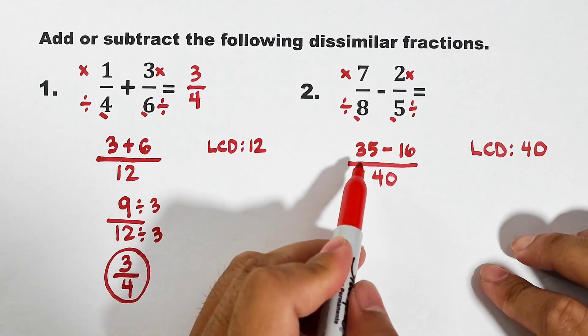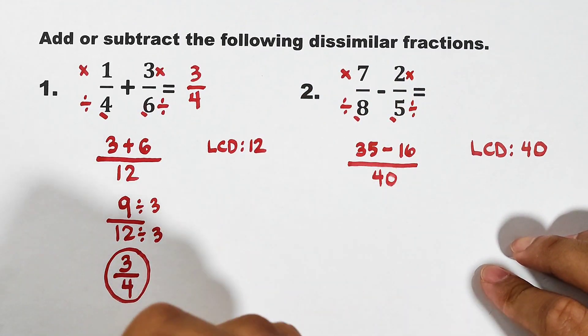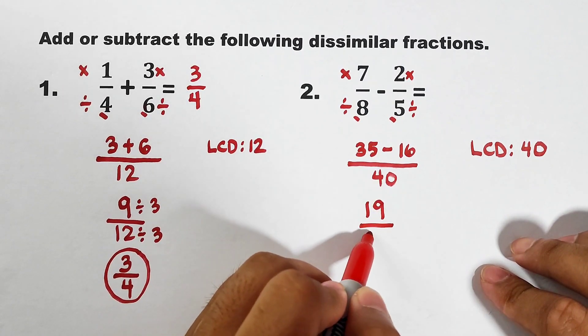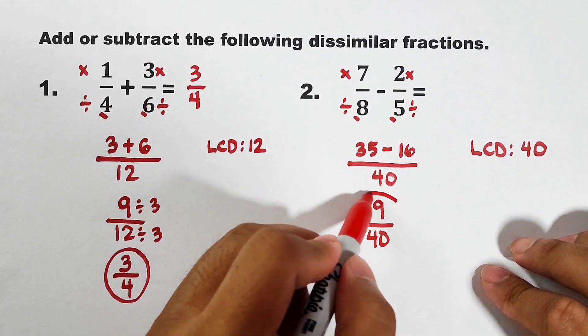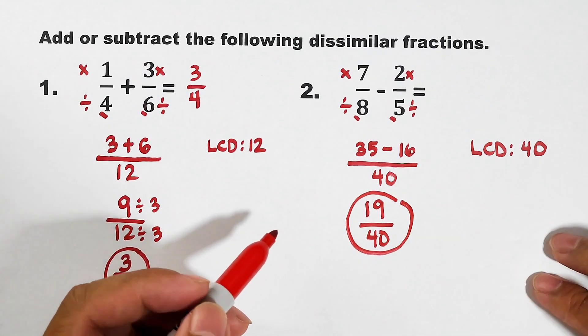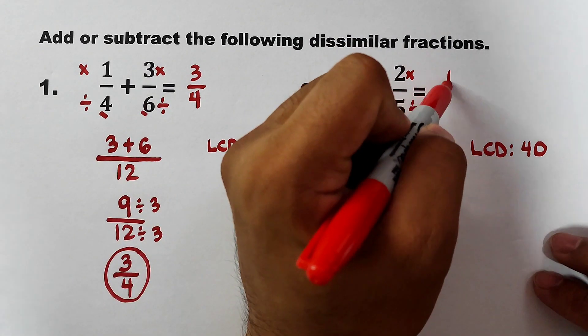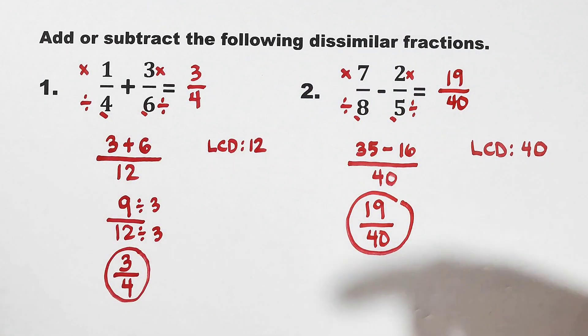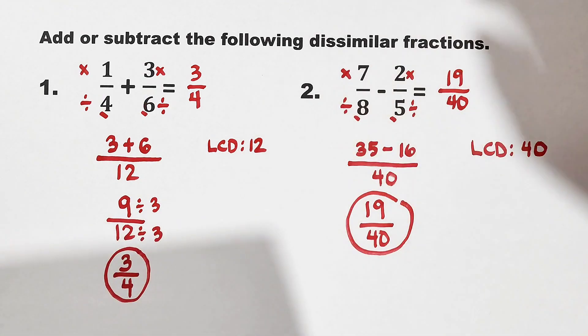Subtract the numerators. 35 minus 16 is how many? The answer is 19. And then copy your denominator, which is 40. And this one is already in lowest terms. So our answer right now is 19 over 40. So I hope that in the first two examples, you already know or you're getting the concept on how to add or subtract dissimilar fractions.